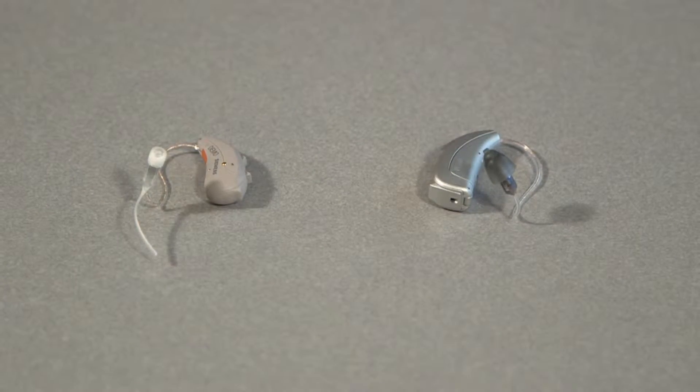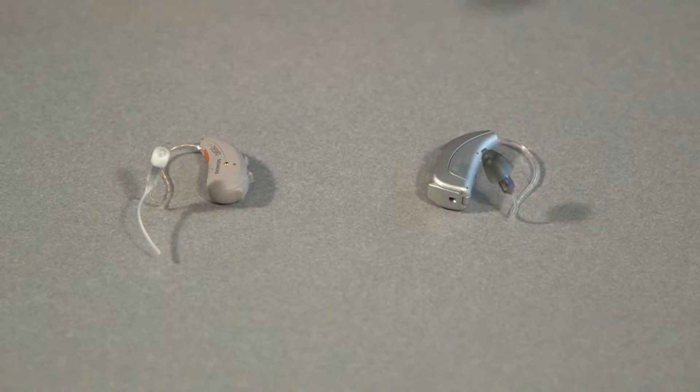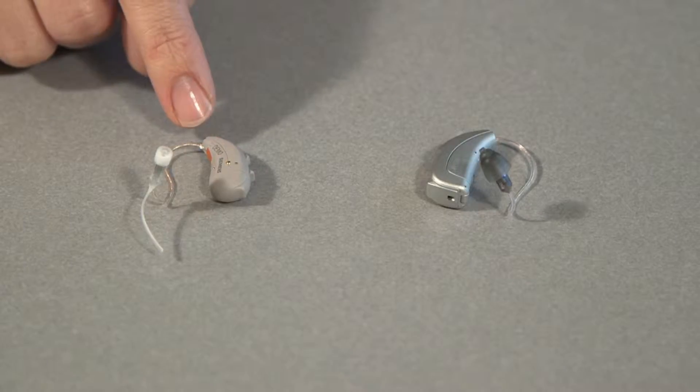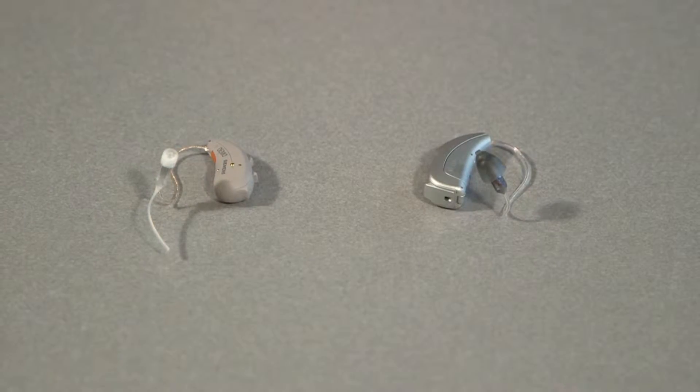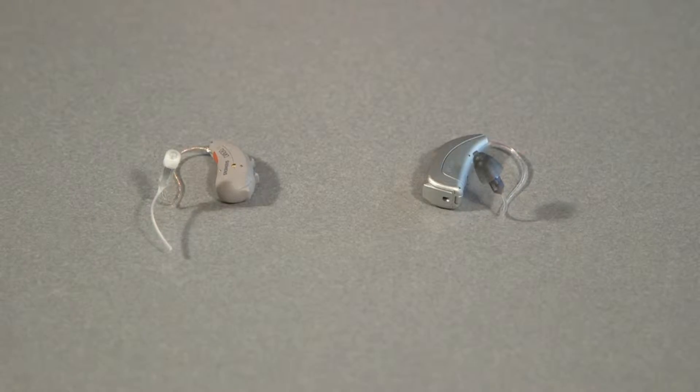If you have a receiver in the ear hearing aid which is the style of hearing aid that sits on the back or the top of your ear and has a little wire that runs down the front, these are the steps that you'll take if the hearing aid doesn't sound like it usually does.